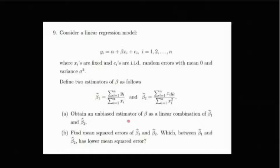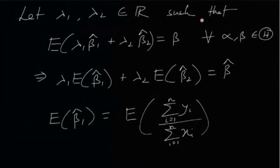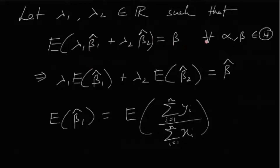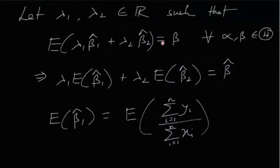For part one, we want to find an unbiased estimator of β as a linear combination of β̂₁ and β̂₂. Let λ₁ and λ₂ be two real numbers such that E[λ₁β̂₁ + λ₂β̂₂] = β for all (α, β) in the parameter space Θ. Here α and β are the parameters, and for this to be an unbiased estimator, the expectation must equal β for all (α, β).